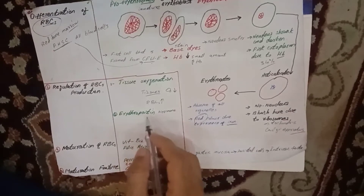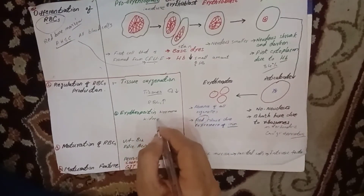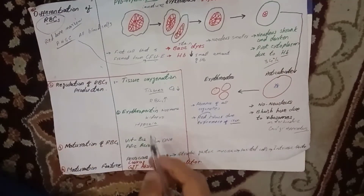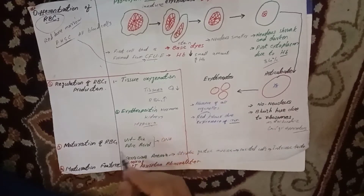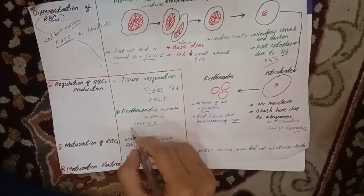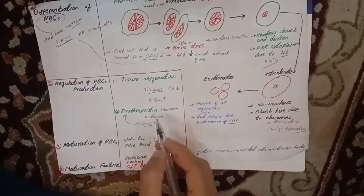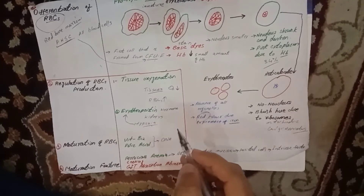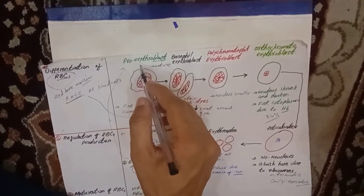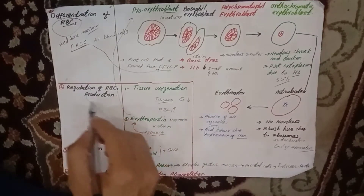The other mechanism is the erythropoietin hormone, which is secreted from the kidneys during a condition known as hypoxia — a condition of low blood oxygen. Under hypoxia, the kidneys are stimulated to produce more erythropoietin hormone, which then acts on the hematopoietic stem cells to produce more pro-erythroblasts, which ultimately give rise to more red blood cells. These are the two mechanisms that regulate red blood cell production.